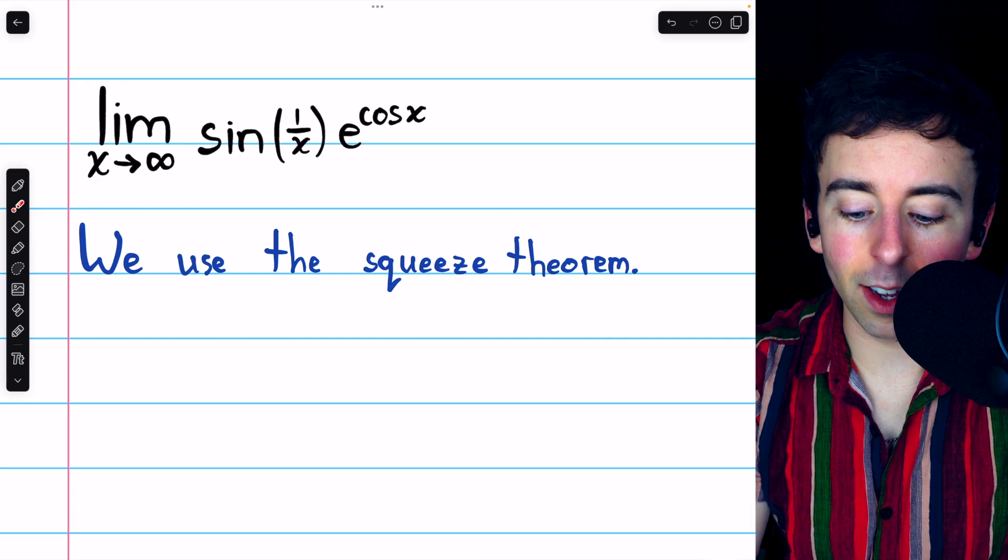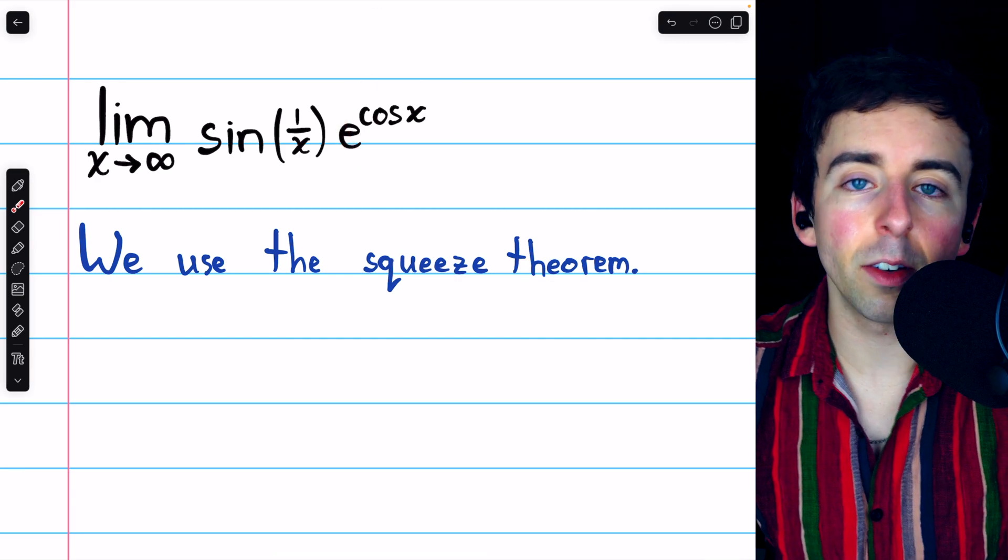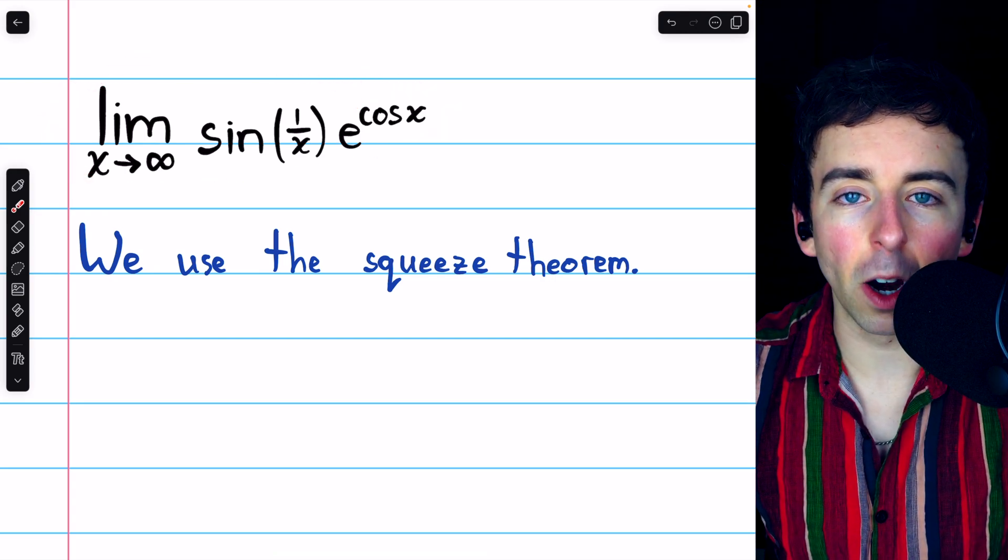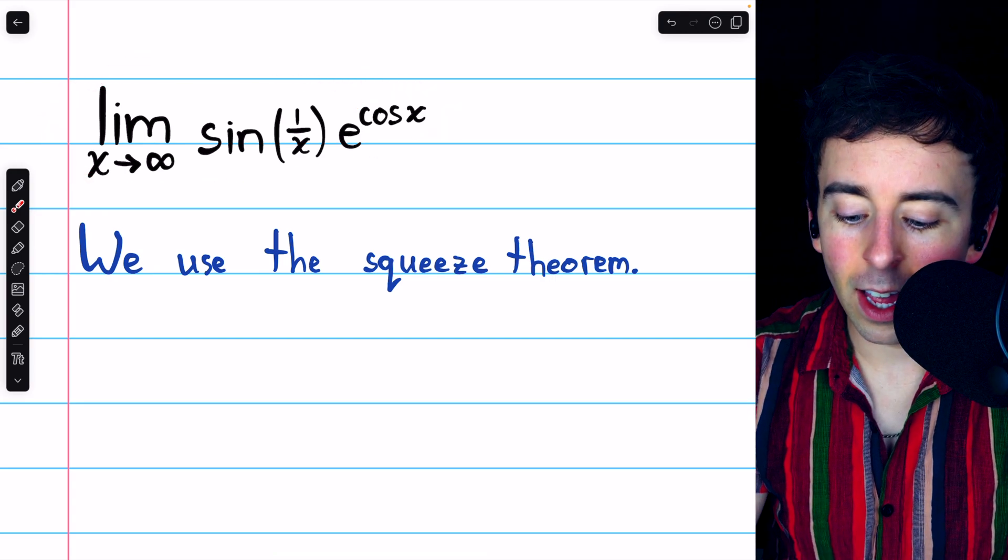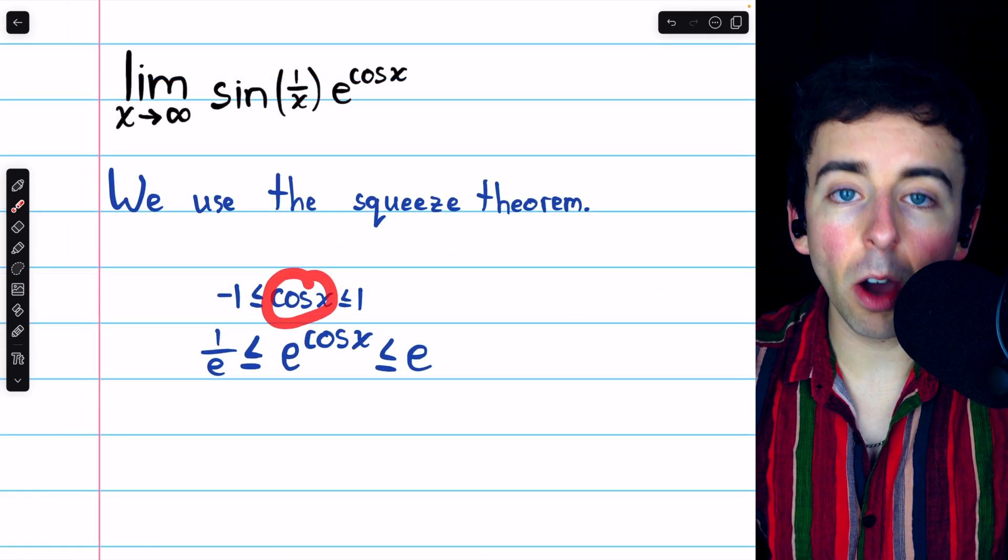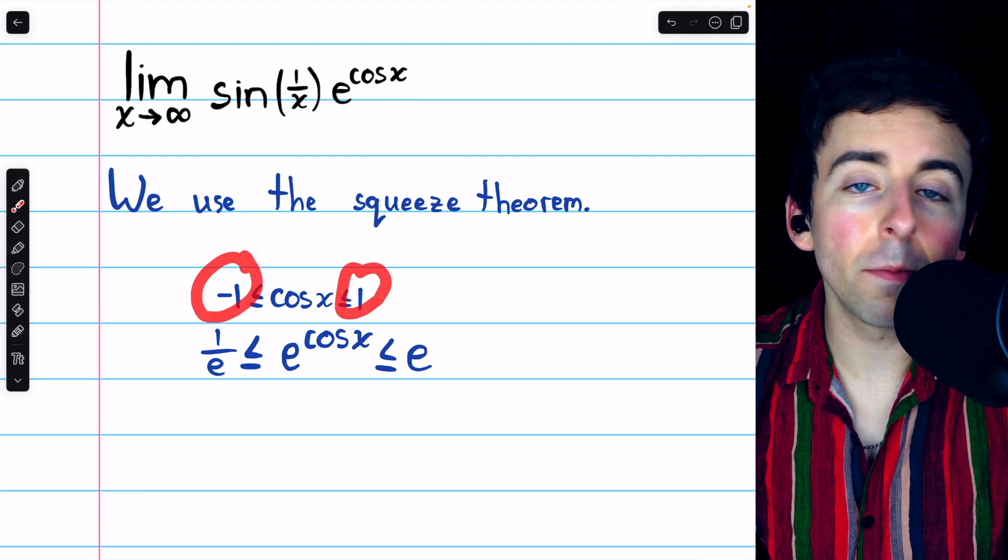Of course, this is specifically because e to the cosine x is oscillating between two fixed values. So if we're trying to prove that this limit equals zero a little bit more rigorously, the squeeze theorem is a great approach, because we know that cosine x, the power of e, is between negative 1 and positive 1.